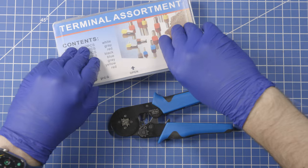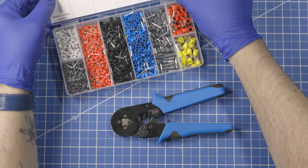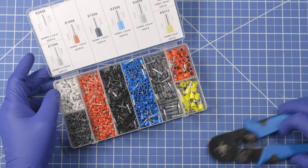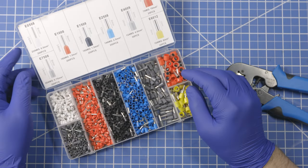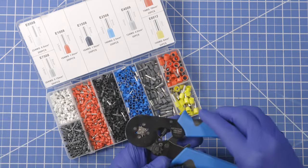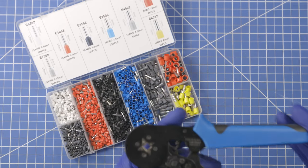The way they work is you take your stranded wire. The point is to make your stranded wire have a sturdier end. And then you use this tool to crimp it down.